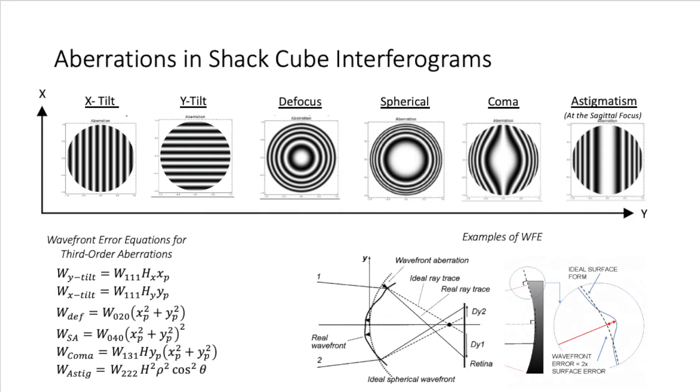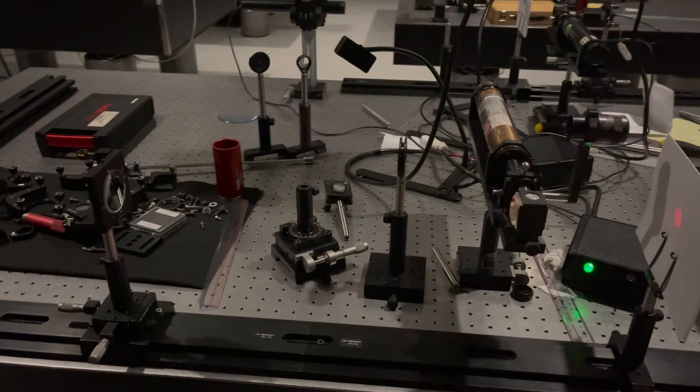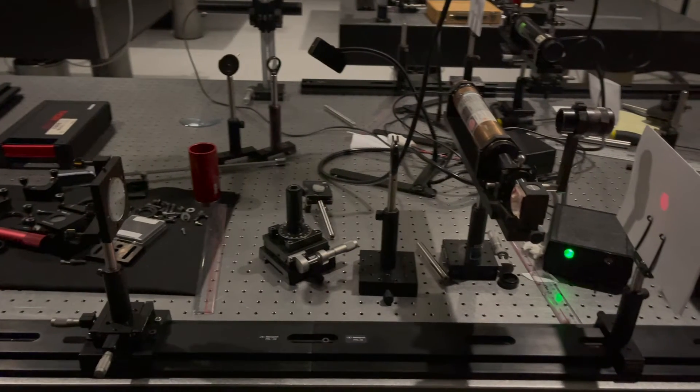The interference patterns we see when measuring a test surface are often a combination of third-order aberrations. In this lab, I examined the surface quality of a long focal length reference mirror and a short focal length curved mirror by observing the wavefront error in the interferograms due to various third-order aberrations.